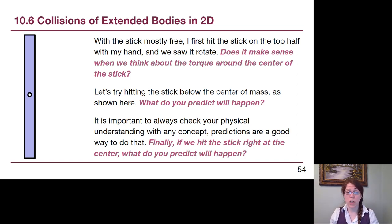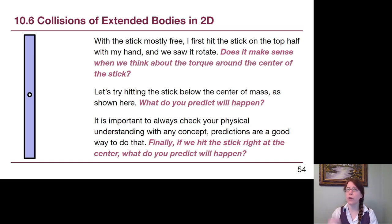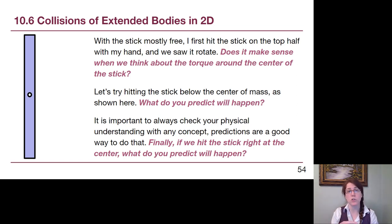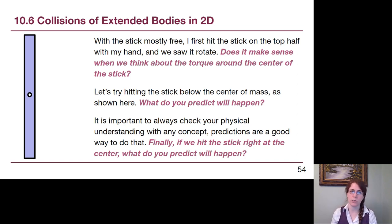Another topic we won't cover in our lecture videos is precession and how vectors work with angular momentum and torque. We've been using clockwise and counterclockwise to define directions, but full-fledged physicists use a single direction in space based on the right-hand rule. You're welcome to read through that in section 10.7, but we won't cover it this semester. See you in the example videos.